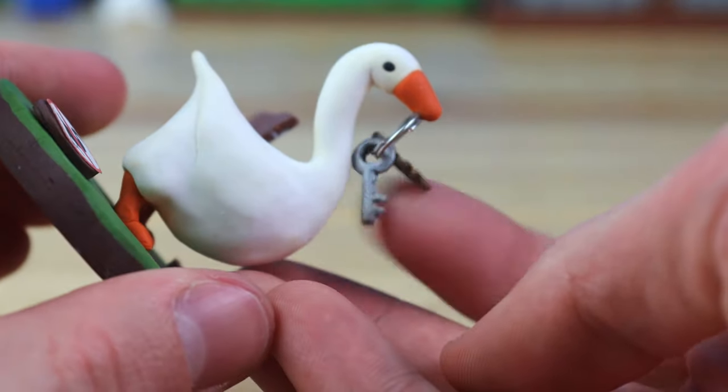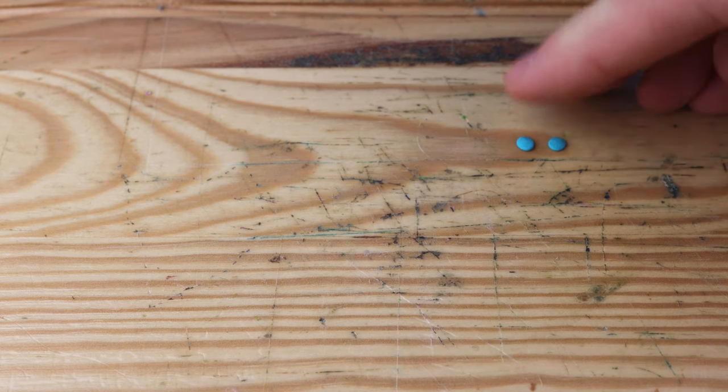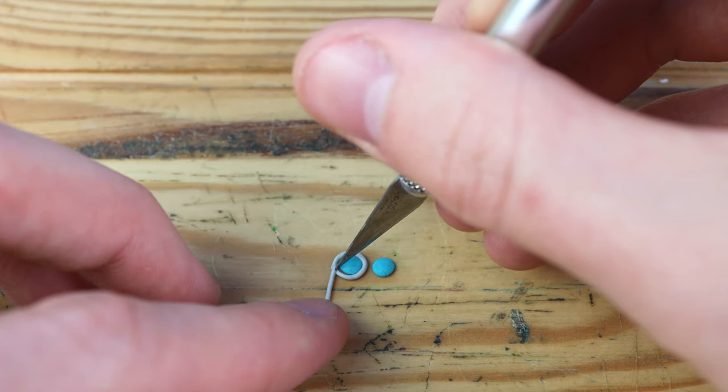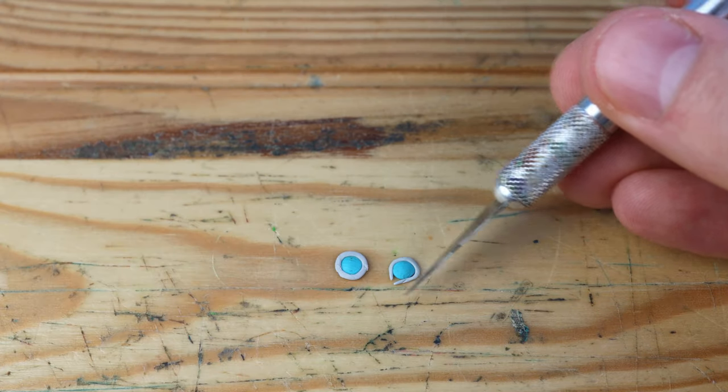Now I wanted to create just a couple random props of things that the goose can pick up in the game, so first we have some glasses. These are fairly basic, but a little tedious to work with since they're pretty small.